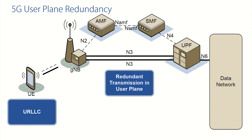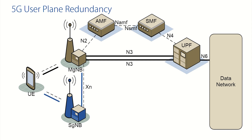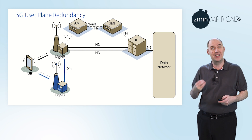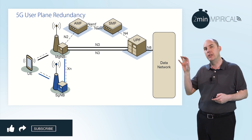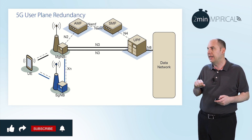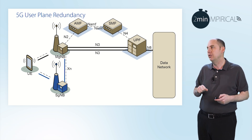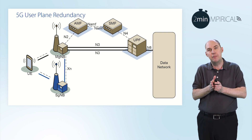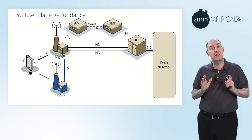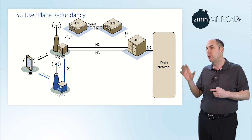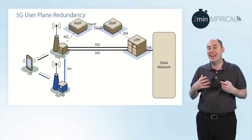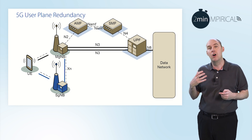Within 5G we have something called dual connectivity. In dual connectivity you have what's called a master and a secondary cell — you can see the M-gNB and the S-gNB. I've added a secondary gNB, and the data can be duplicated so that the same data comes from the master but can also get routed through the secondary. We now have that redundancy on the air interface. However, at this point you still have a potential point of failure — possibly the master gNB — and anything wrong there obviously causes an issue.